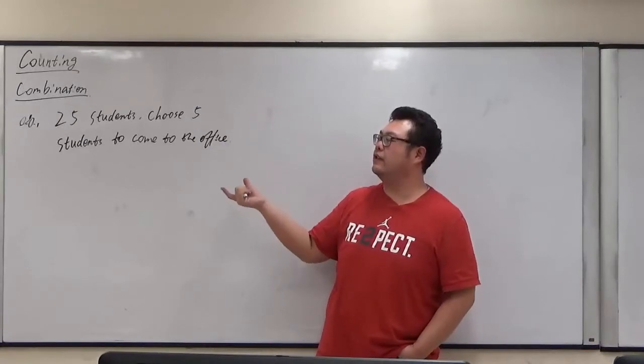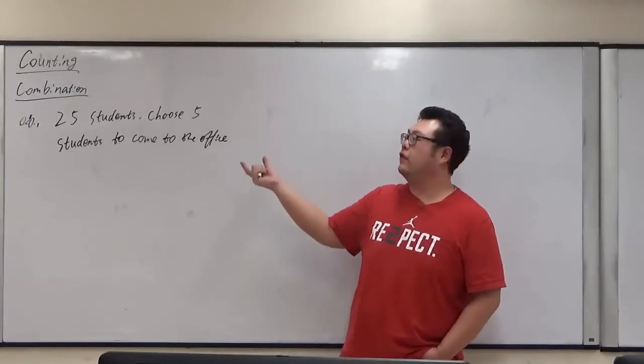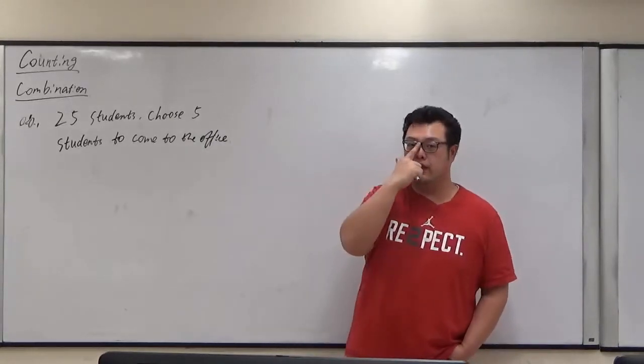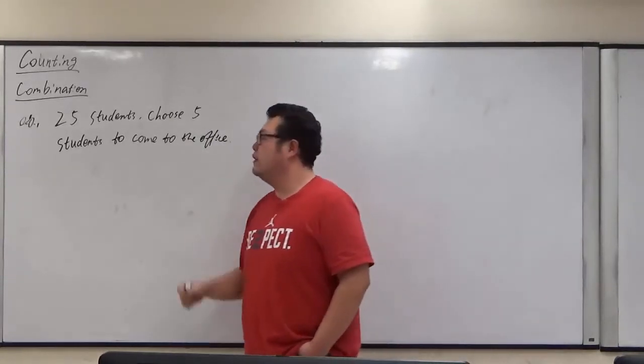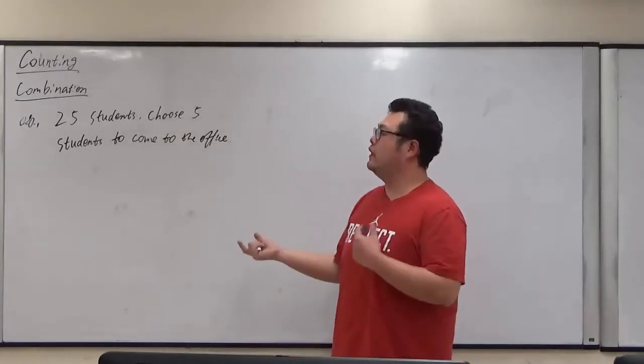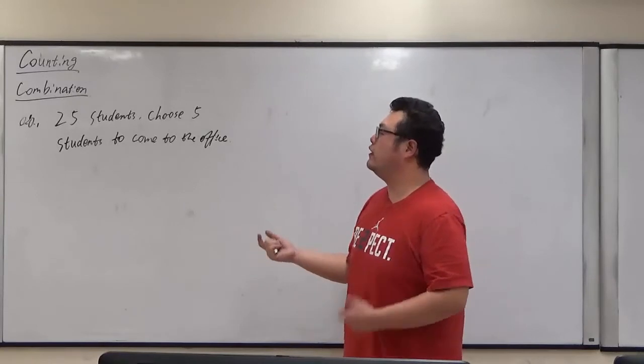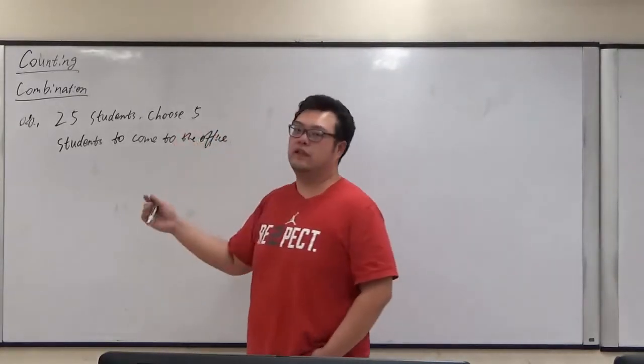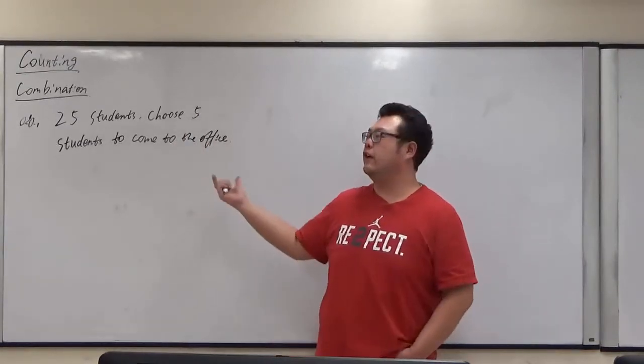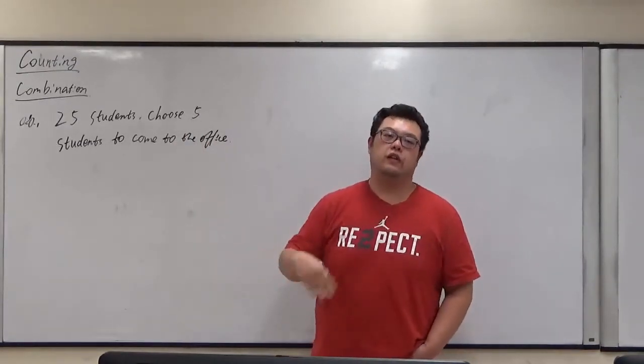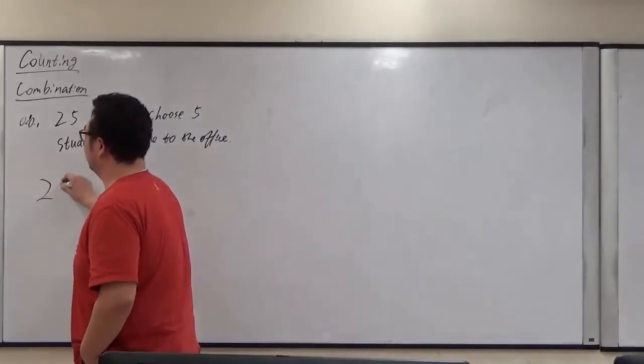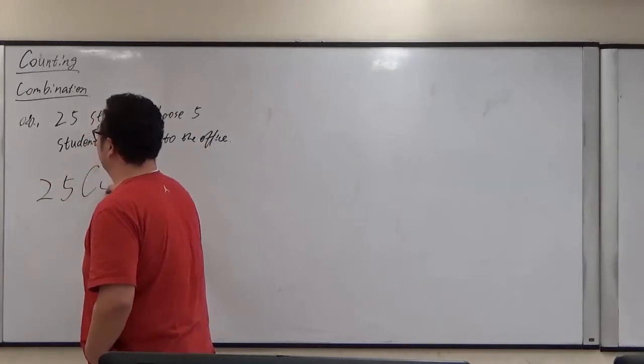So in the professor's class of 25 students, if you want to choose five random students to come to his office and talk to those students, that follows the way of combination. Basically, those five students have to be five individual different students. And of course, they come in as a group, so no matter in what order they come.